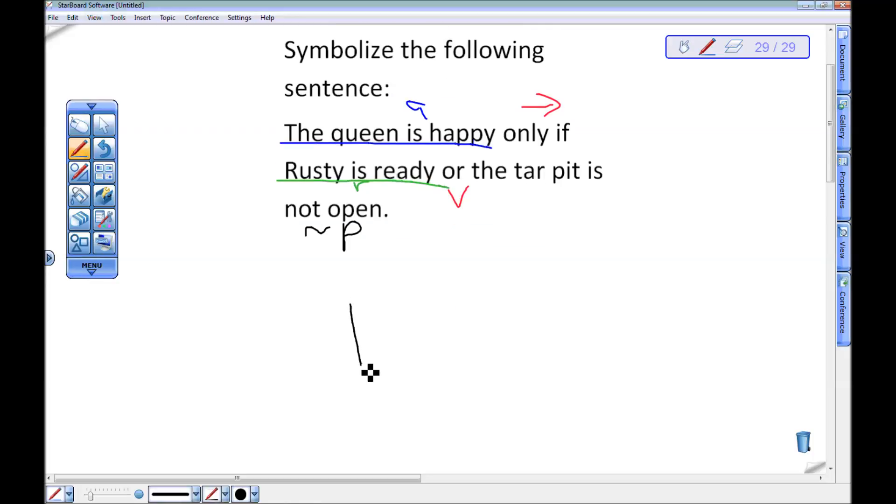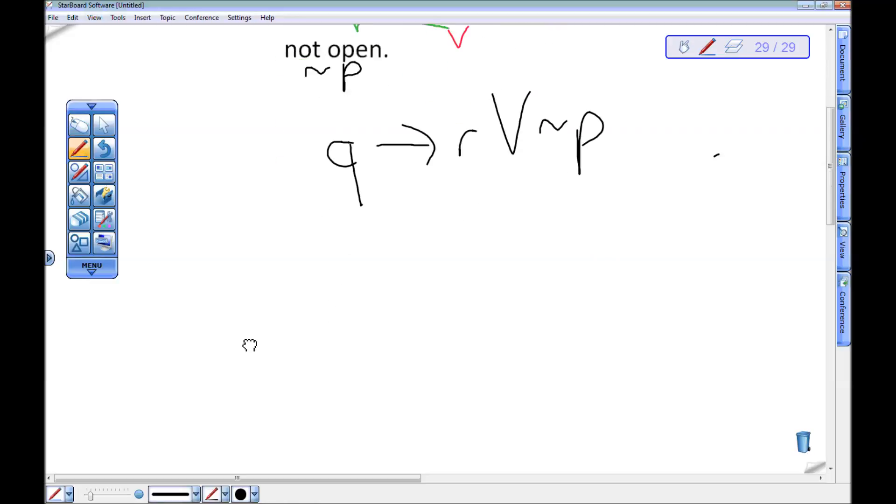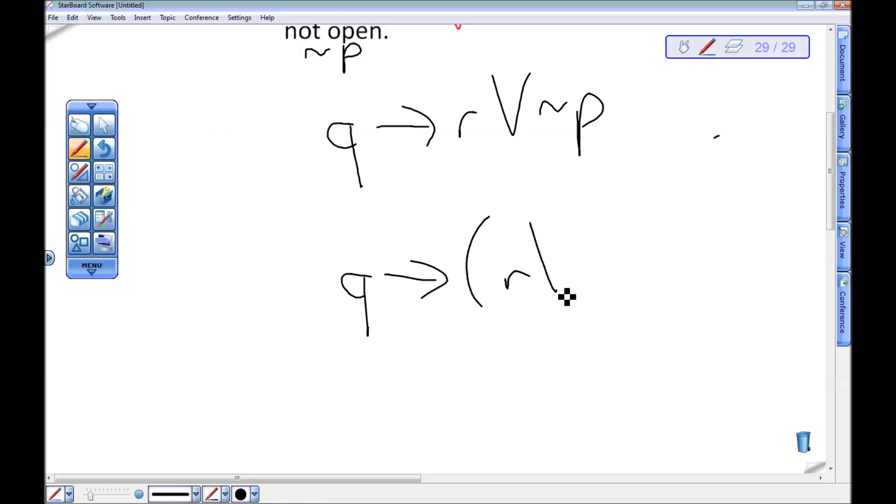So to me this looks like if Q then R or not P. Again, if I'm just symbolizing that's good enough. If I'm going to now do anything with this, I want to remember my order of operations and remember that this is the same as if Q then R or not P. Because the disjunction is higher up on the order of operations than the conditional.